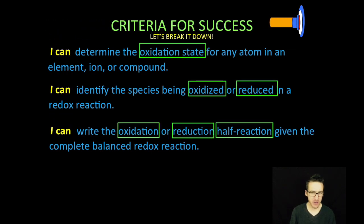First thing we are going to do, we are going to determine the oxidation state for an atom in any element, ion, or compound. Numero dos, we are going to identify the species being oxidized or reduced in a redox reaction. Numero three, we are going to write the oxidation or reduction half reaction given the complete balanced redox reaction.